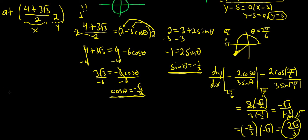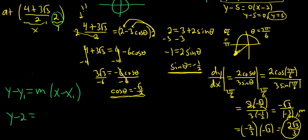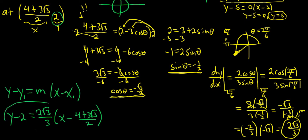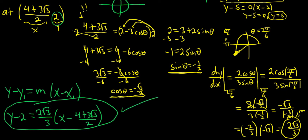Finally, using the point-slope formula y - y₁ = m(x - x₁), with y₁ = 2 and x₁ = 4 + 3√3/2, we get: y - 2 = (2√3/3)(x - (4 + 3√3/2)). We can leave it in this form — solving for y would just create a big mess and isn't necessary.